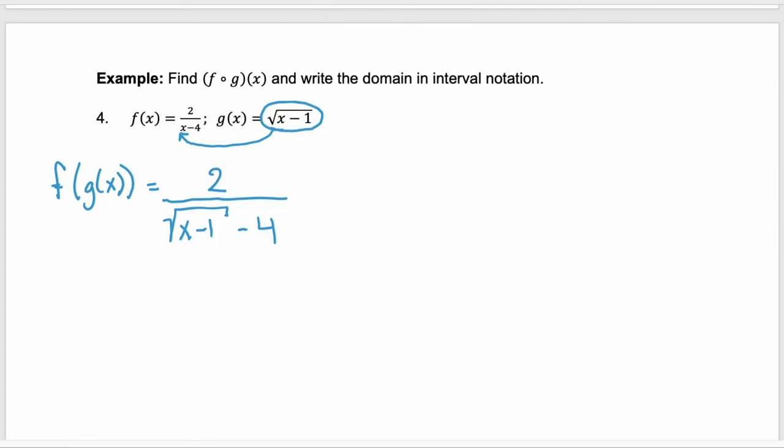We have the composition. So now we need to identify the domain and write it in interval notation. To do that, we start with that innermost function g of x. We're looking at this square root of x minus 1. Are there any restrictions on the domain? Remember the domain are the x values. So what x values are not allowed? Well, we can't have negatives. We can't take the square root of a negative. So our restriction is that x has to be greater than or equal to 1 for that g of x function.